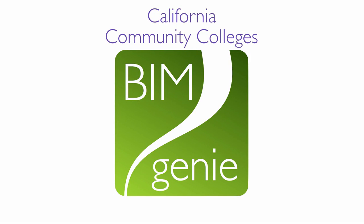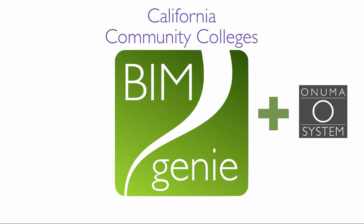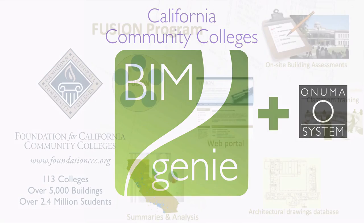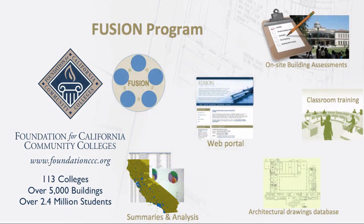The Foundation for California Community Colleges maintains and manages a system called Fusion for 113 colleges spanning over 5,000 buildings that supports over 2.4 million students. It is the largest higher educational system in the United States.